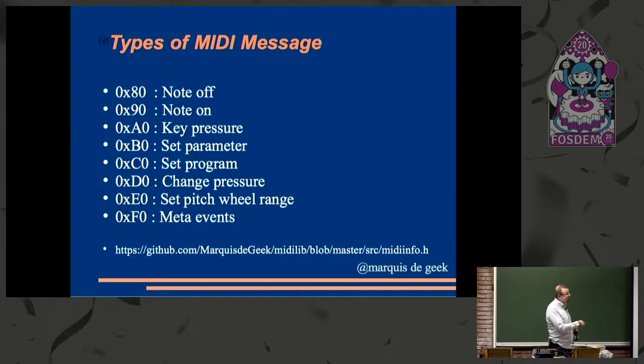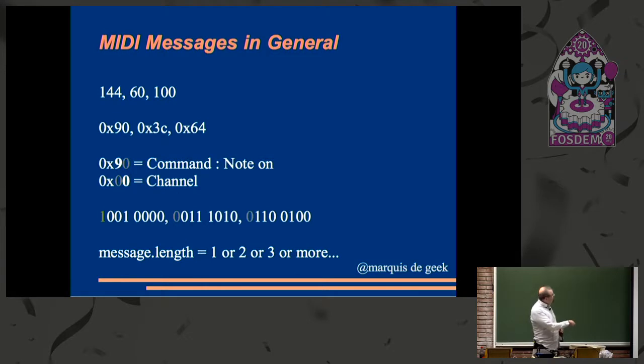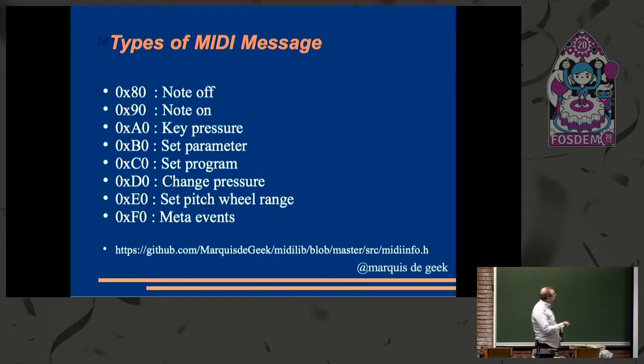And that's these ones. So, note off is the most important one because it's the first one. No idea why. Note on is the second one. Although you will find, and this is where it gets fun. That 100, the first byte is the command. The second two bytes are the data bytes. Now, you can have any number of data bytes you like. They're controlled by the command. This is the volume. Some keyboard manufacturers have decided that if you put 0 as the volume on a note on message, that means note off. Because, obviously, it's logical, right?